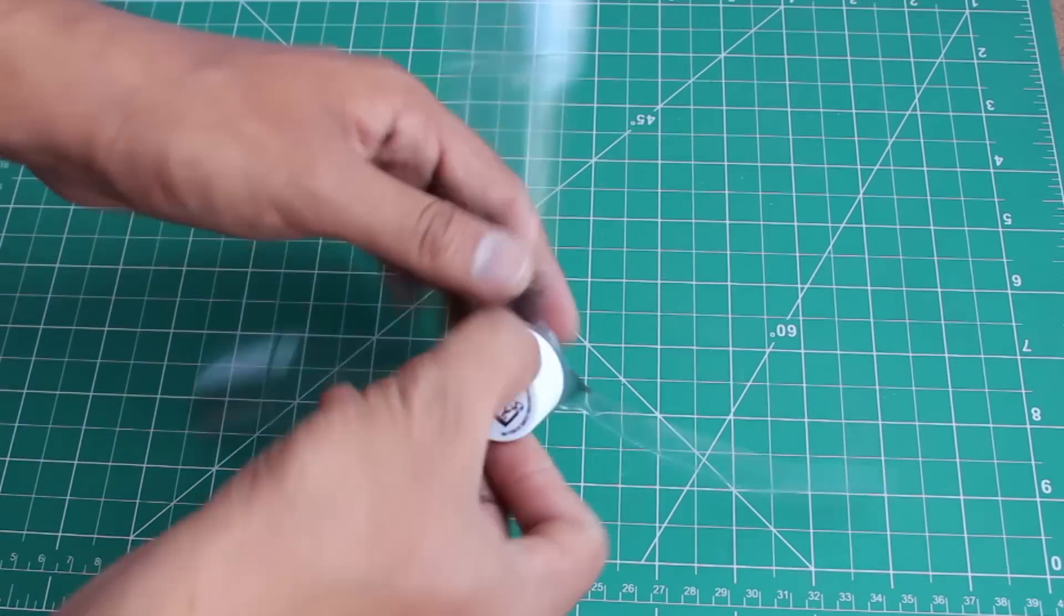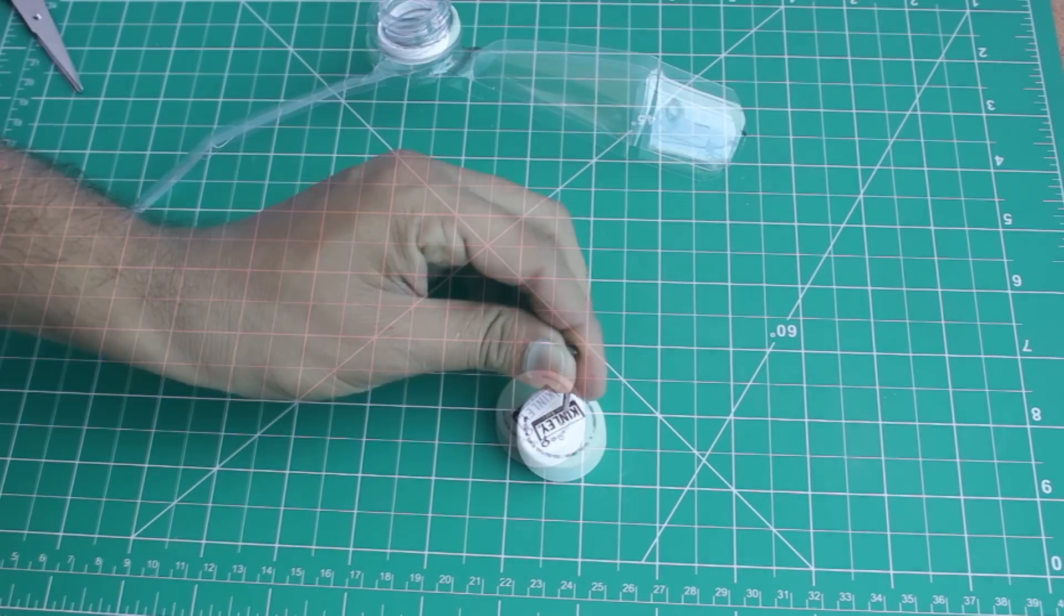Our fan wings are ready now. Remove the bottle cap and exactly at the center make a small hole.